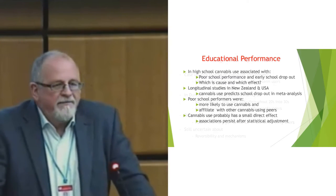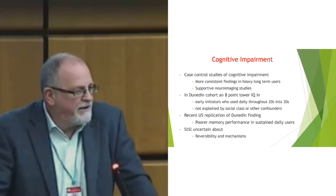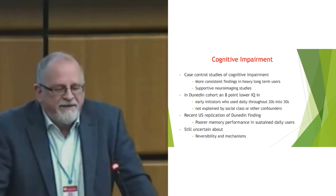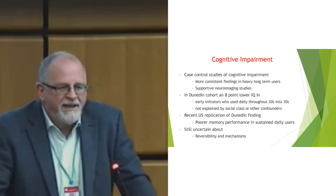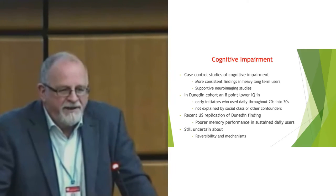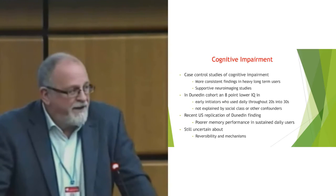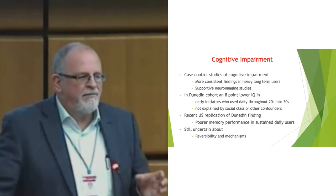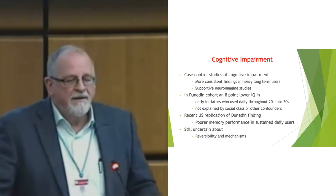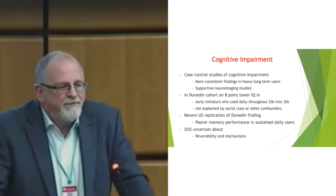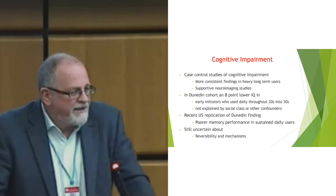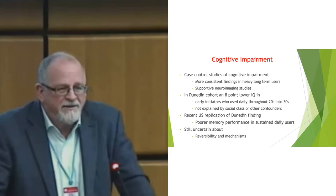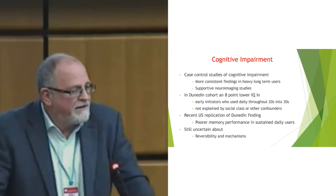An obvious mechanism through which cannabis might impair school performance is impairing cognitive ability. Case-control studies comparing young heavy cannabis users with non-users on various measures of cognitive performance have generally found that heavy cannabis users — typically daily or near-daily users — perform more poorly on a range of cognitive tasks. There's support for this from neuroimaging studies using functional and structural MRI of young people's brains, suggesting there may be structural and functional changes in brain areas implicated in memory and performance.